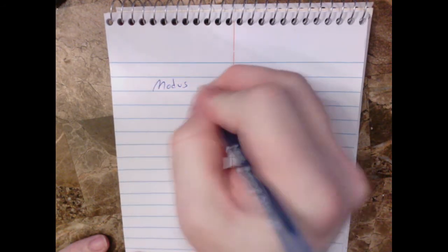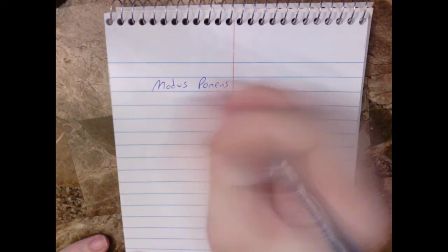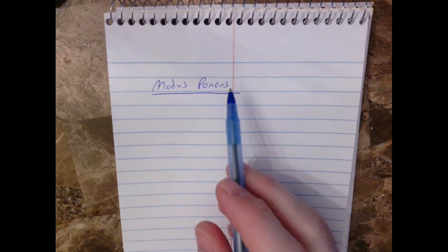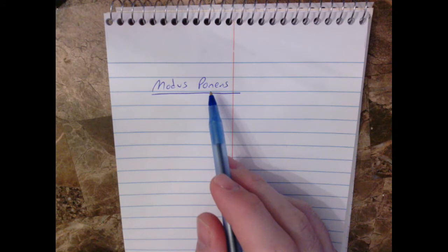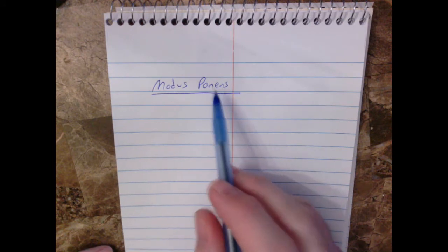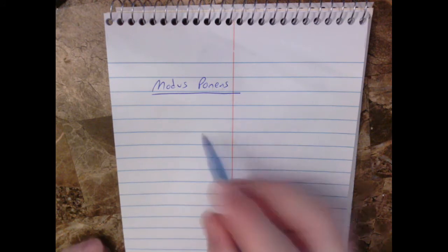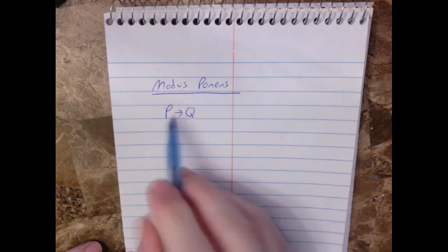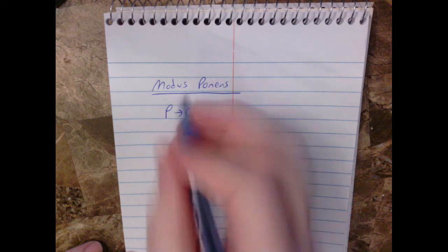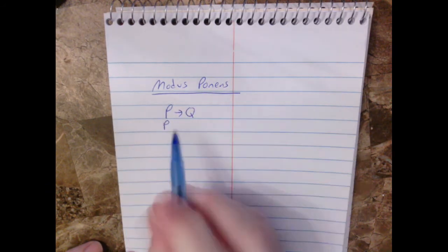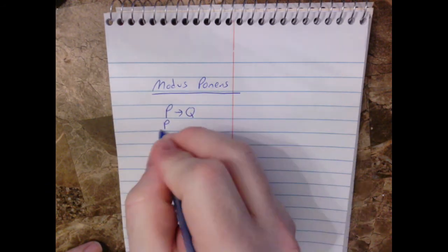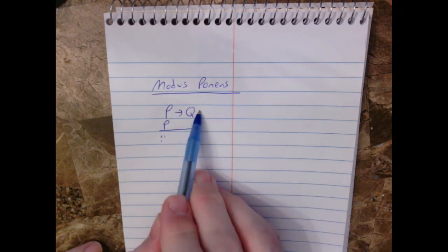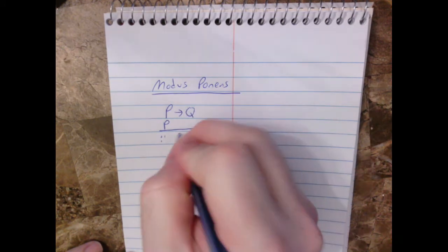The first one we learned about was called modus ponens. And that was, it's Latin, I think it's sort of the mood of affirmation or something that was to be affirmed. But what does that mean? Well, that means if you have the conditional statement, if P then Q, and you have the simple statement P, what modus ponens says is you can conclude, if P then Q, and you have P, therefore Q.